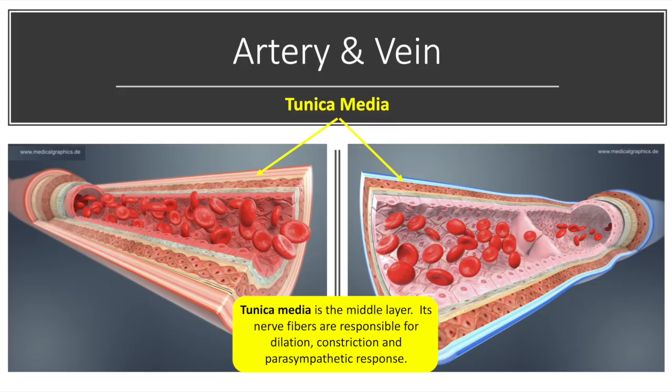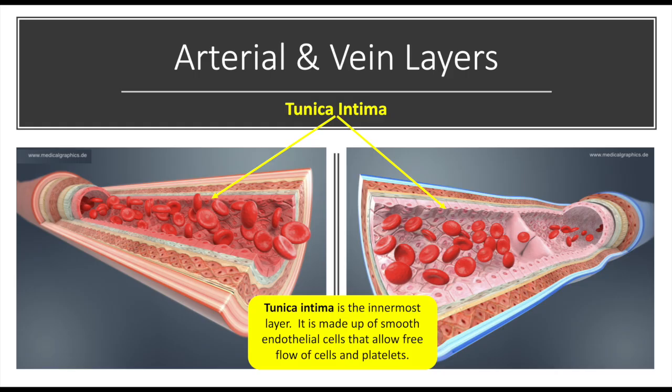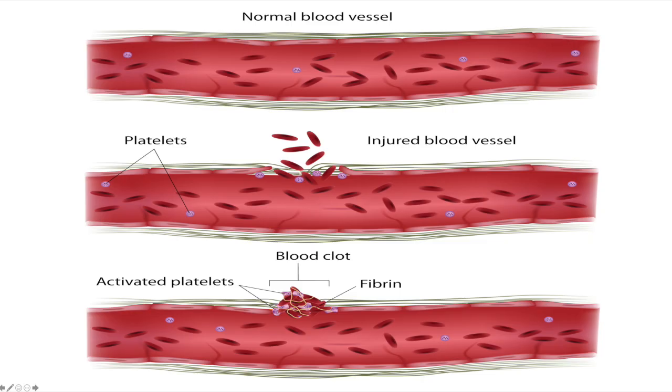The tunica media is the middle layer. It has nerve fibers that are responsible for dilation, constriction, and parasympathetic responses. The tunica intima is the innermost layer. It's made up of smooth endothelial cells that allow free flow of cells and platelets.